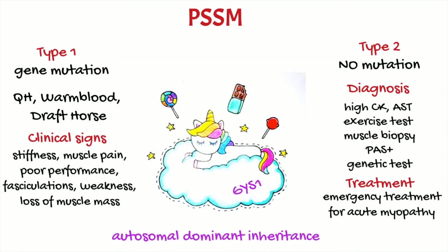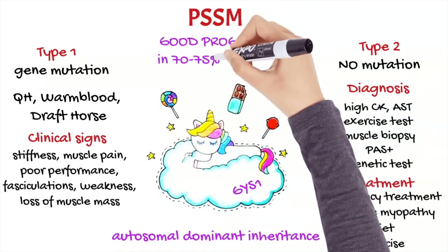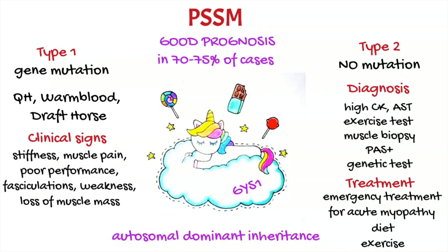It is not recommended to leave these horses at rest for prolonged periods. Long-term management includes diet and programs of exercise in order to decrease the amount of glycogen in the muscle. Diets with low starch and sugar content are recommended, and it is important to maintain regular physical activity and minimize the days of rest. With this management, 70 to 75 percent of cases improve and may come back to satisfying levels of performance. If you like the video, press like, and if you want to watch more videos, subscribe to the channel.